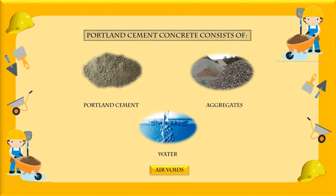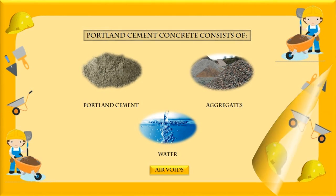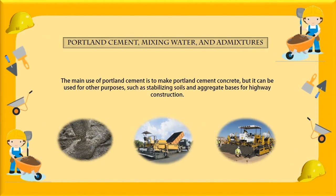Portland cement concrete consists of Portland cement, aggregates, water, air voids, and in many cases, admixtures. This chapter covers the topic of Portland cement, mixing water, and admixtures. This chapter describes Portland cement concrete. The main use of Portland cement is to make Portland cement concrete, but it can also be used for other purposes, such as stabilizing soils and aggregate bases for highway construction.